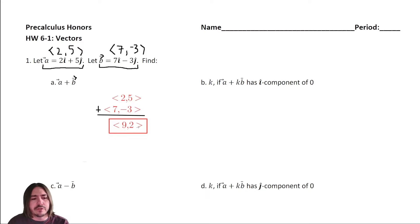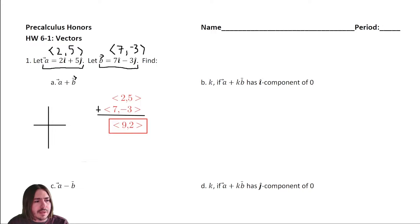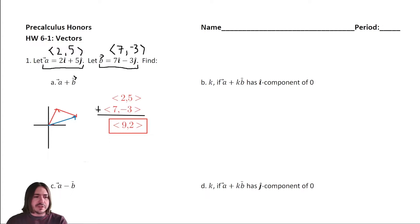So A plus B would be a vector going nine units horizontally and two units vertically. If you're visualizing this — not asking you to sketch it, but if you did — two comma five would be two over and five up. Seven comma negative three would be seven to the right and three down. Nine comma two would be the resulting vector pointing from the initial point to the end. That's nine comma two — the visual representation and your actual answer.